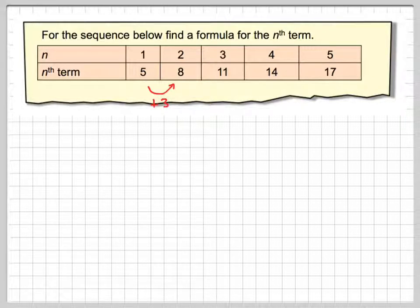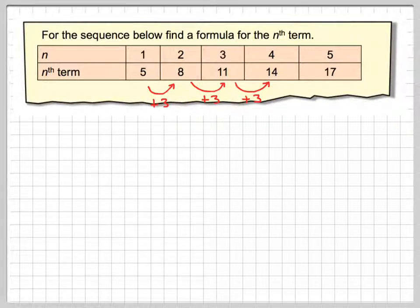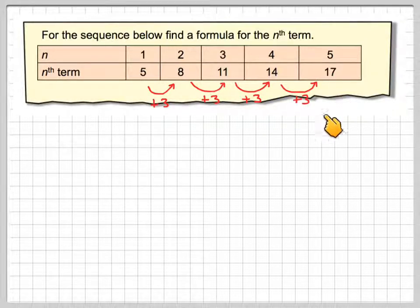We might notice that these actually go up in 3 each time. So, we go from 5 to 8 is 3, 8 to 11 is 3, 11 to 14 is 3, and 14 to 17 is 3.